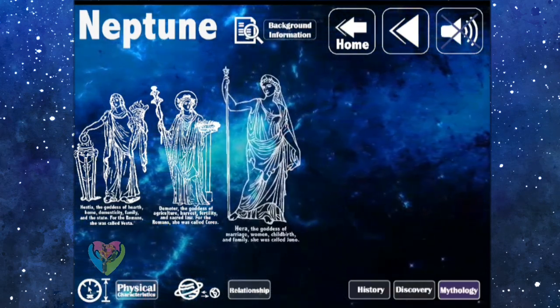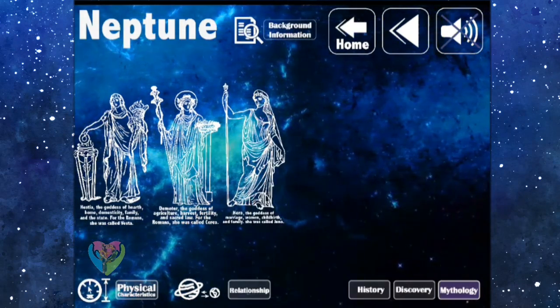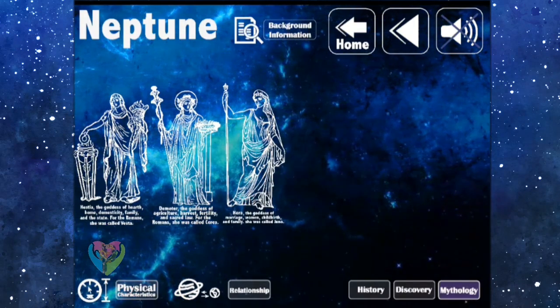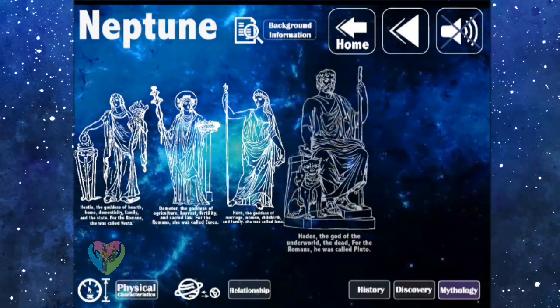3. Hera: The goddess of marriage, woman, childbirth, and family. She was both the older sister and wife of Zeus. For the Romans, she was called Juno.